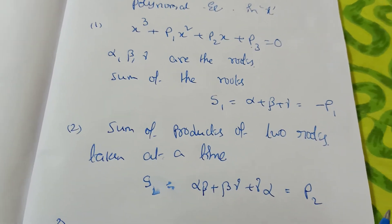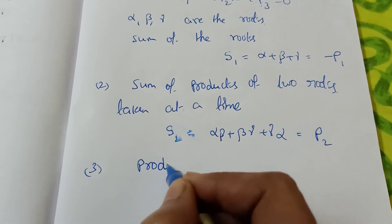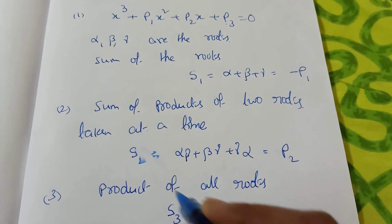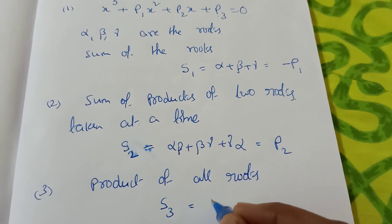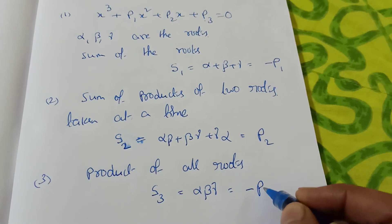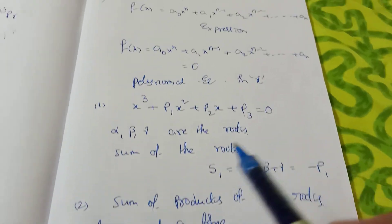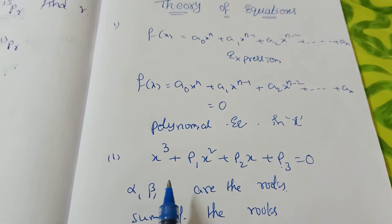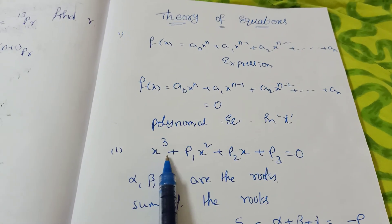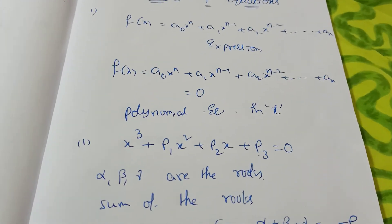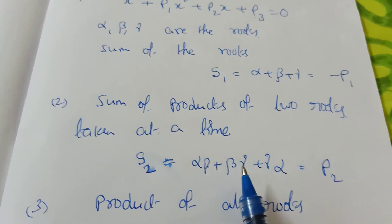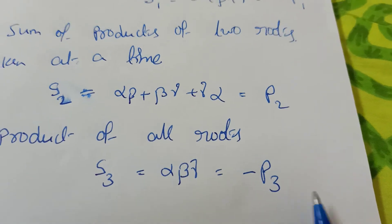The third point is the product of all roots: S3 = alpha·beta·gamma. The formula is −p₃. The pattern alternates: −p₁, +p₂, −p₃. Note: this applies when the leading coefficient is 1. If there is a coefficient 'a', then divide by 'a' accordingly. To recap: S1 = −p₁, S2 = p₂, S3 = −p₃.